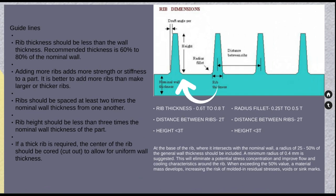At the base of the rib where it intersects with the nominal wall, a radius of 25 to 50 percent of the general wall thickness should be included, with a minimum radius of 0.4 mm suggested in this area. This will eliminate potential stress concentration and improve the flow and cooling characteristics of the rib. When it exceeds 15 percent of the nominal wall thickness, a material mass develops and can increase the risk of stresses, voids, and sink marks.